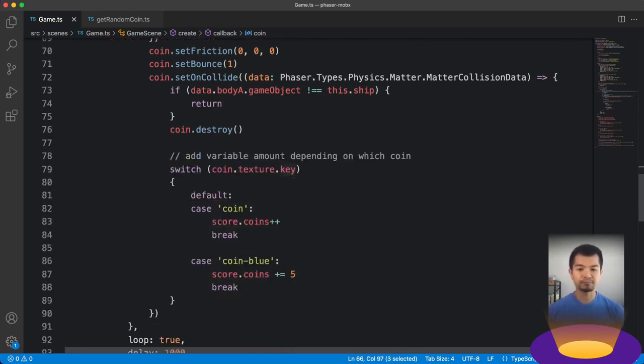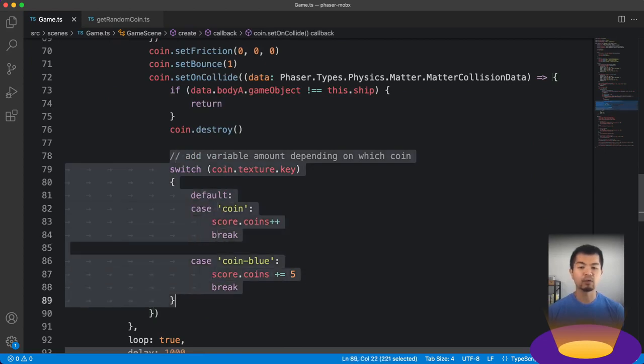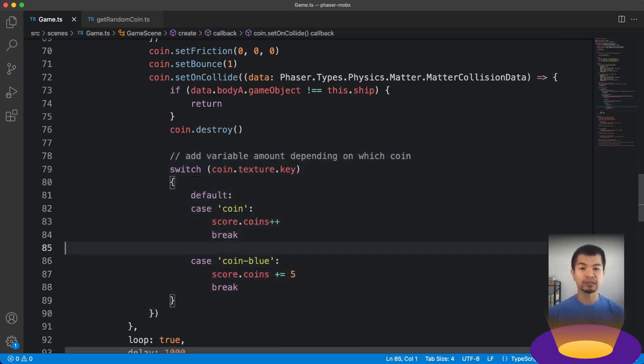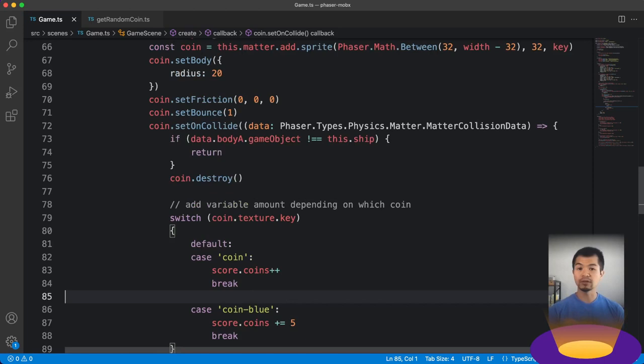And then here to give you different points for the color, the type of colored coin you're going to collect, we just do that here. We check against the coin's texture key. So if you're a coin, you get one point or one coin. If you're coin-blue, you get five coins. So let's look at getRandomCoin because that's where the bulk of the logic exists.